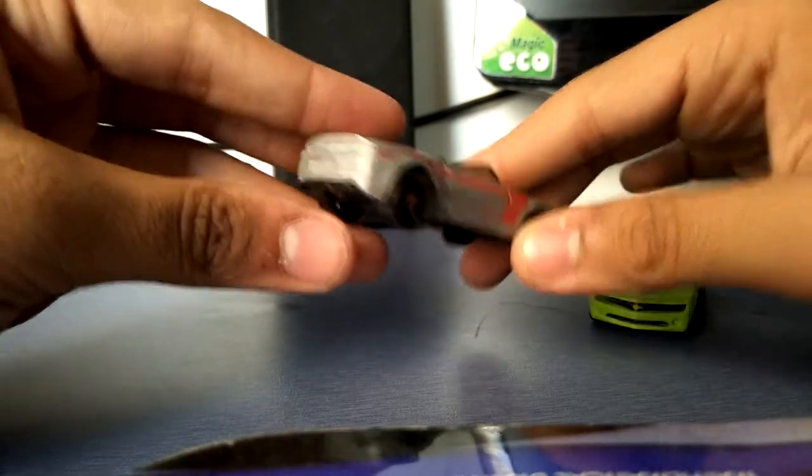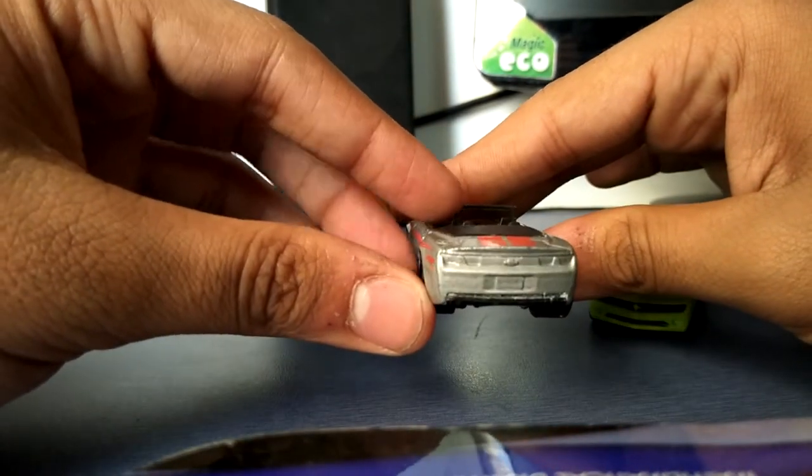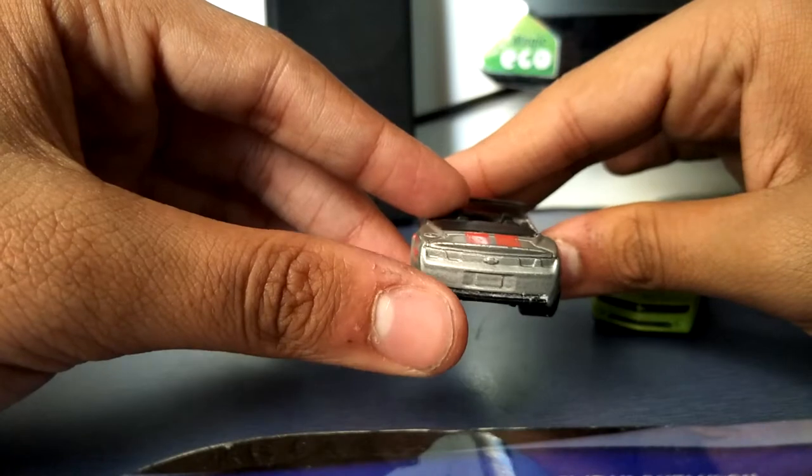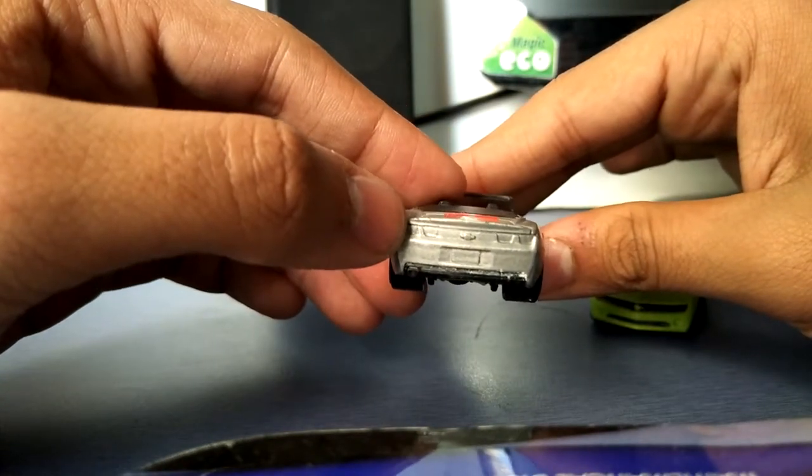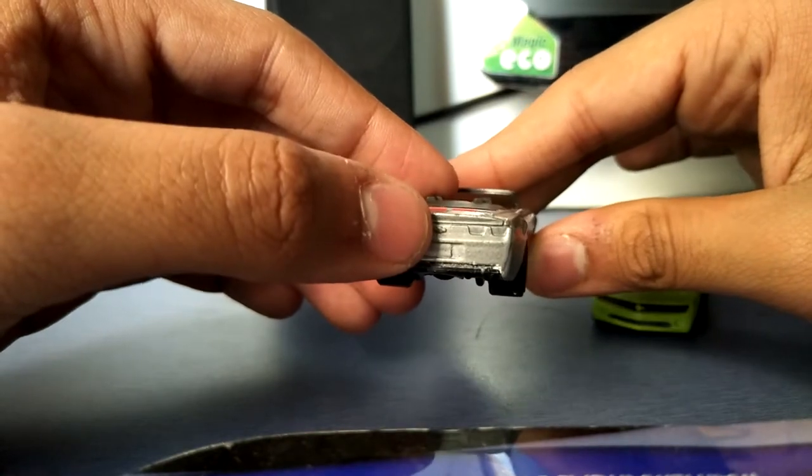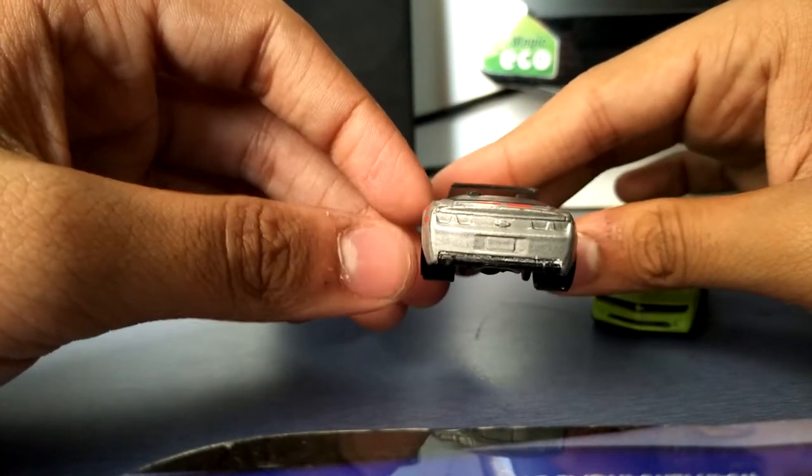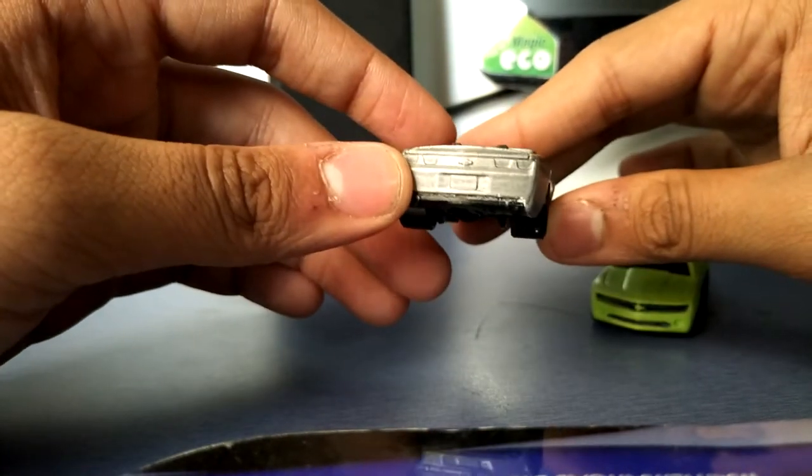If you see the back, this one has those minor details which a car should have. You see those lines, the place of the number plate, the two headlights, the Chevrolet sign. This is really beautiful at the back, which was not in the non-convertible but is in the convertible.